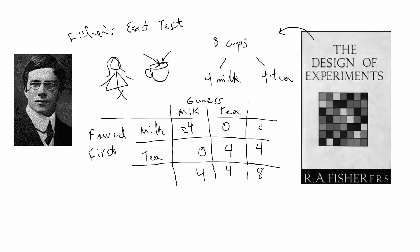If she had guessed correctly, the table would hypothetically look like this, where her guess of milk being poured first was four times out of the four times milk was poured first, and her guess of tea being poured first four times is four times out of the four times tea really was poured first, and then the total of all the trials is in this box.